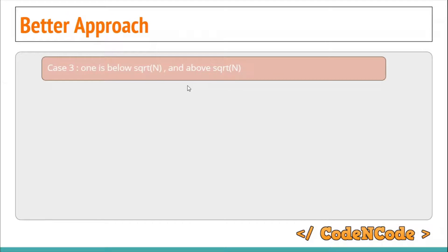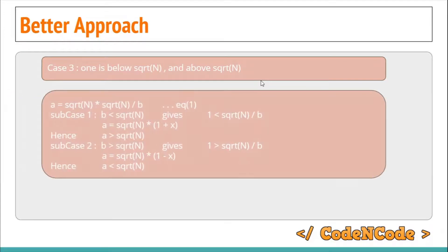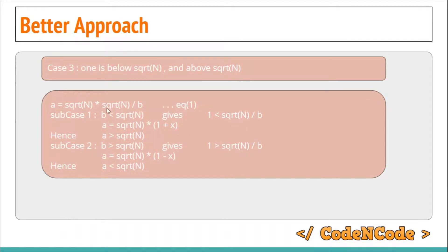To prove case 3 — that one element lies below square root of n and the other above — we use direct proof. We can write a as (square root of n times square root of n) divided by b. Sub-case 1: if b is less than square root of n, then square root of n divided by b is greater than 1, so we can write it as 1 plus x. Expanding, a equals square root of n plus x times square root of n, which directly shows a is greater than square root of n.